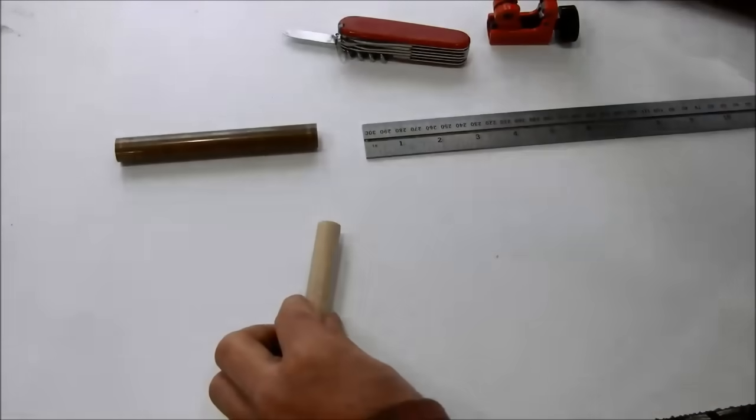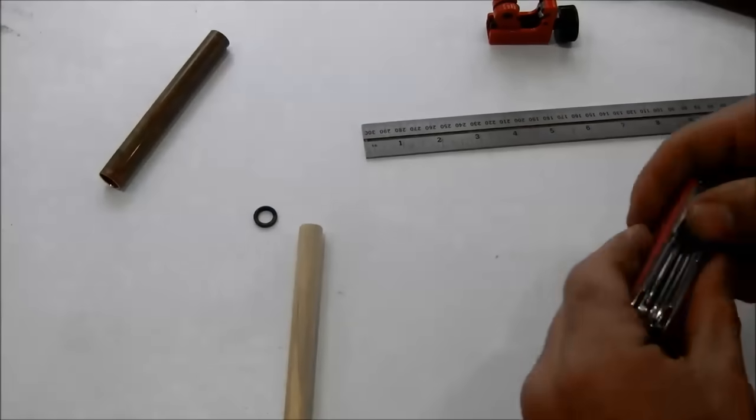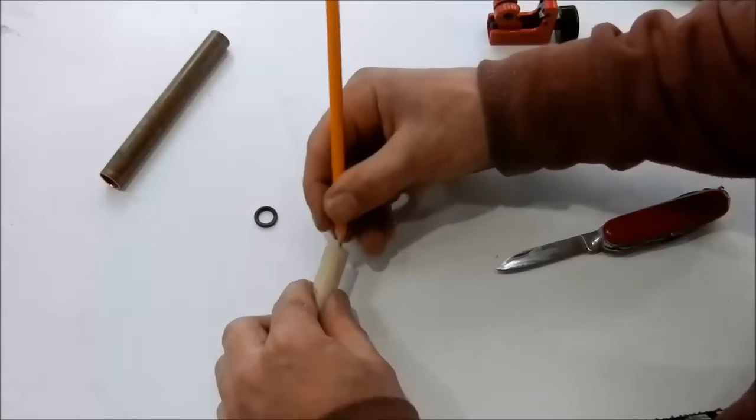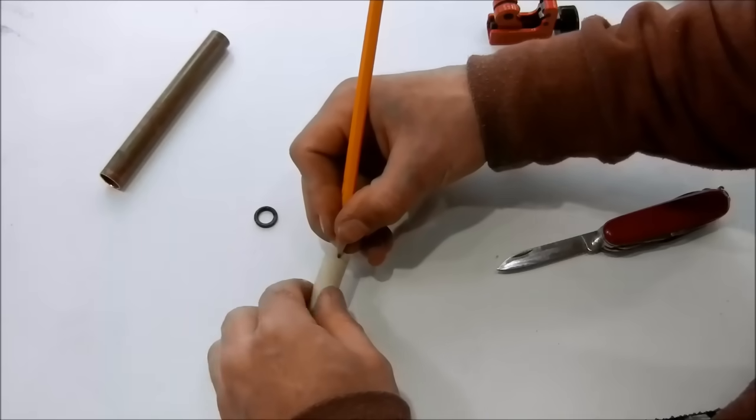Now we need to cut a groove for the o-ring in the end of this piece of dowel, about a quarter inch from the end. Mark a line all the way around.